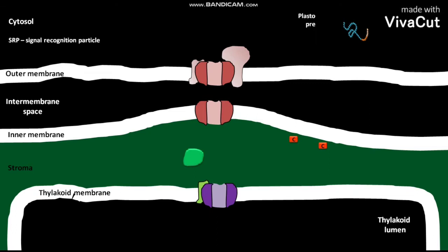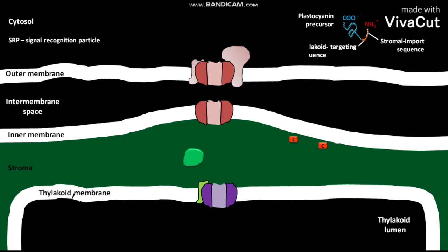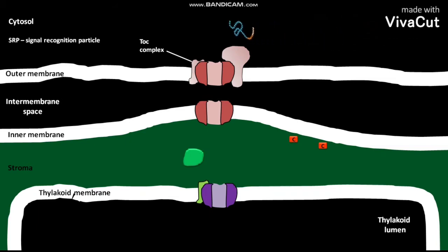The cytosolic plastocyanin precursor protein has a carboxyl terminal domain and an amino terminal domain. The amino terminal domain has a stromal import sequence and a thylakoid targeting sequence. The stromal import sequence directs the import of the precursor protein from the cytosol to the stroma through the TOC complex present in the outer membrane of the thylakoid.